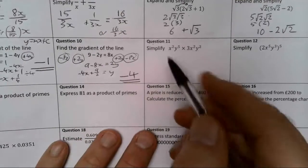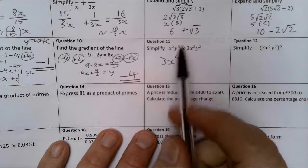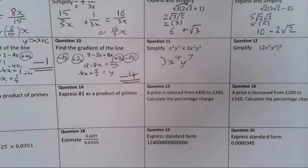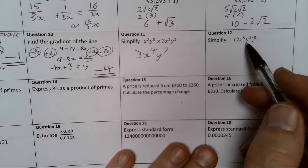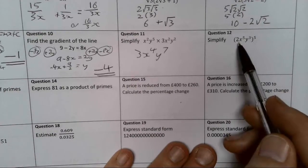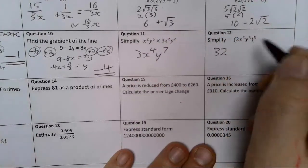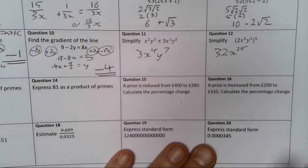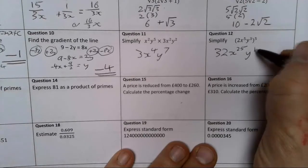Question 11. x squared times by 3x squared gives me 3x to the power of 4. y to the 5 times by y to the 5 gives me y to the power of 7. Raising all of this, 2x to the 5 y cubed, all to the power of 5. So I'm going to take my coefficient, which is this 2, and I'm going to raise that to the power of 5: 2, 4, 8, 16, 32. x to the 5 raised to the power of 5 gives me x to the 25 using my brackets index law, whereby those are going to be multiplied. y to the 3 to the power of 5 gives me y to the 15.